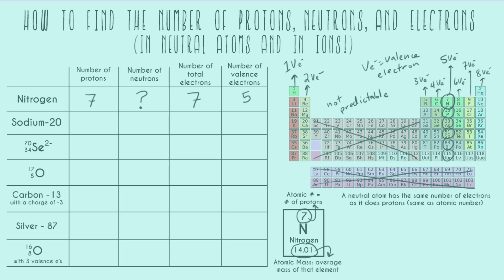Now let's go to an element written a little bit differently: we have sodium and then a dash and then the number 20. We can always find the number of protons by identifying the element on the periodic table. Sodium is abbreviated Na, found right here on the left-hand side — it's number 11. So sodium will always have 11 protons. When elements are written like this — full element name, dash, then a number — that number is the mass number.